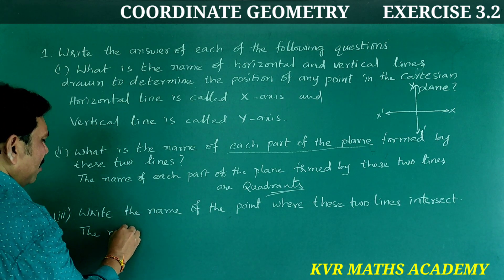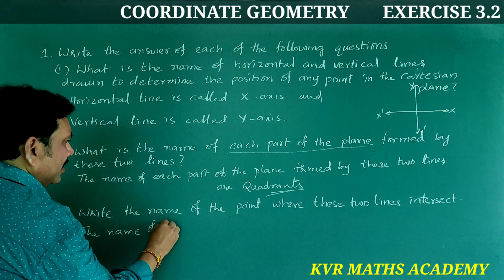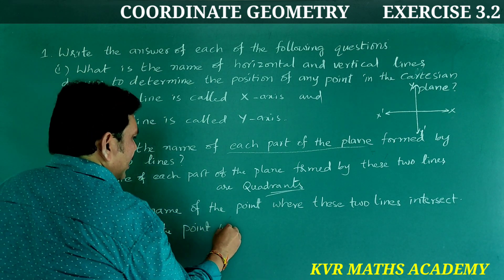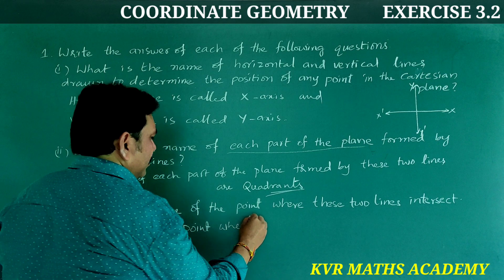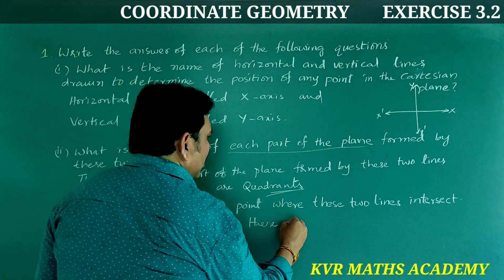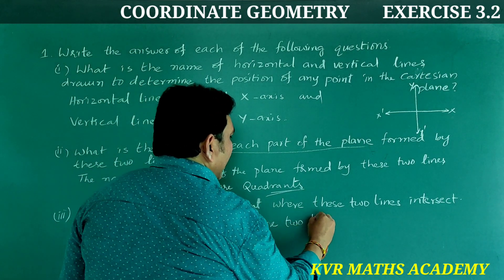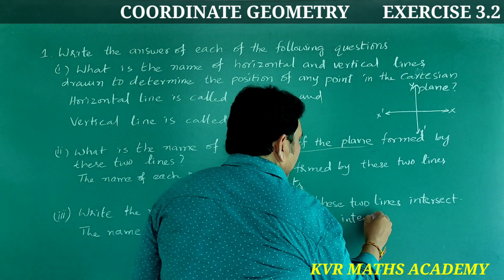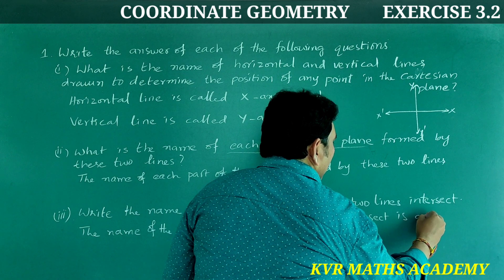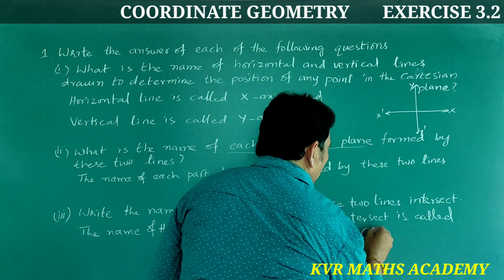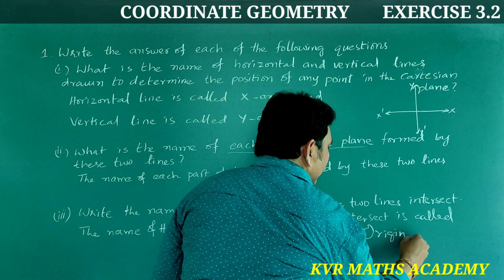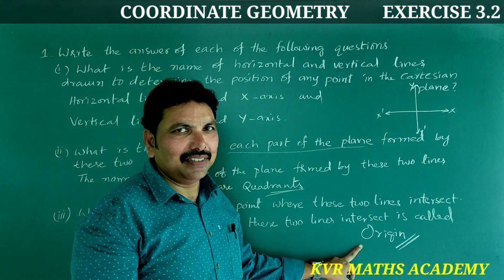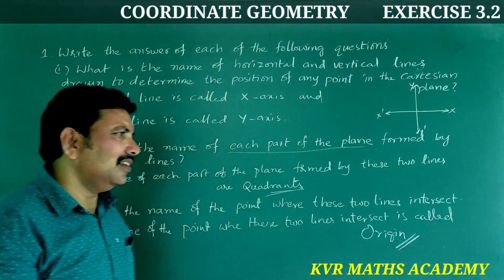The name of the point where these two lines intersect is called origin. It will be represented as zero comma zero. Right, yes.